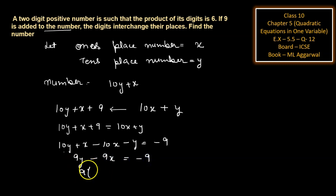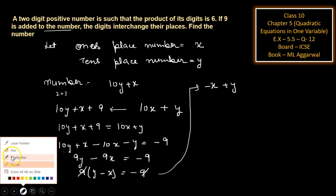Take common 9 from left-hand side. Then it will be y minus x is equal to minus 1. 9 is cancelled out with this. So we get y minus x is equal to minus 1.